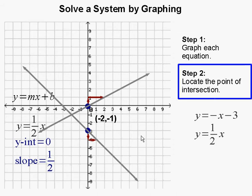Step 2: Locate the point of intersection. The point where the two lines intersect is our solution for both equations, for x and y. That is right there at negative 2, negative 1.